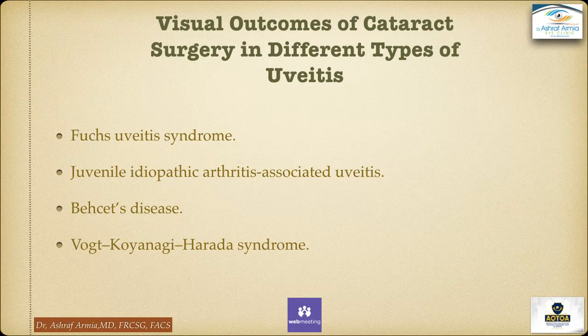There are four different important types — the four main causes of uveitis — which I'm going to stress on in this presentation: Fuchs Uveitis Syndrome, juvenile idiopathic arthritis associated with uveitis, Behcet disease, and Vogt-Koyanagi-Harada syndrome.